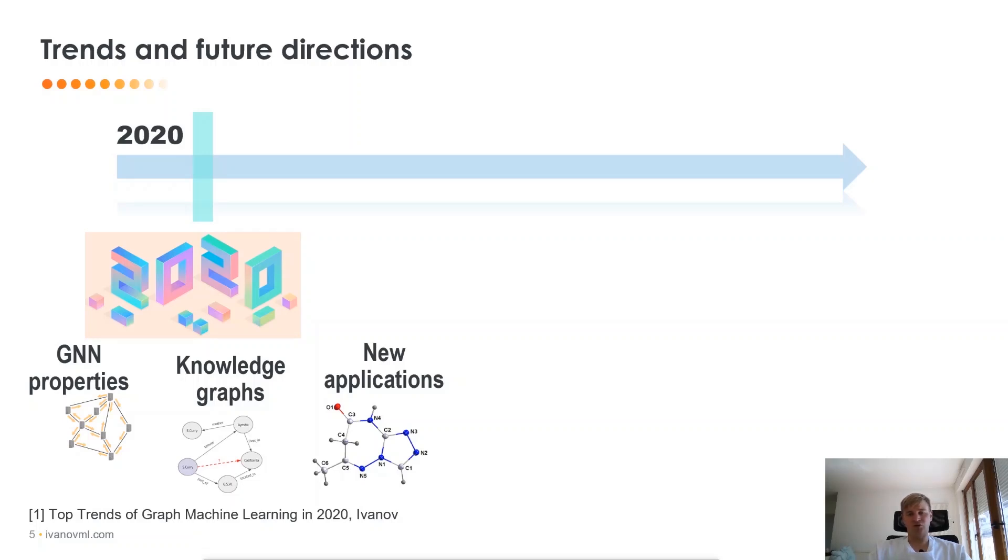And the final one was applying graph neural networks for different domains, different applications where they haven't been used before. For example, I already described to you how you can use GNN for autonomous driving or for drug discovery. But there are many more applications that people have tried. For example, fixing bugs in software or optimizing the computational graphs of TensorFlow.